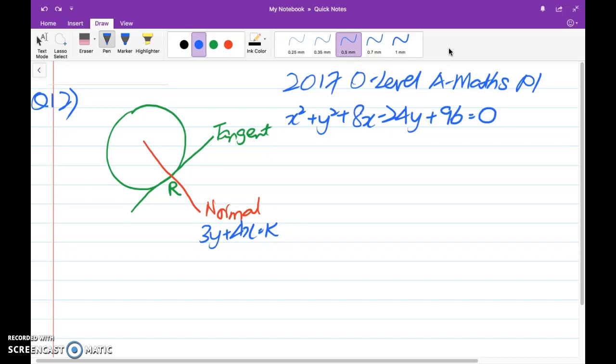it is actually in the equation of your normal which is also equation of a line. So first of all, before you even start the question, you got to understand to find the unknown k, you must have one point on the normal. I repeat, you must have one point on the normal.